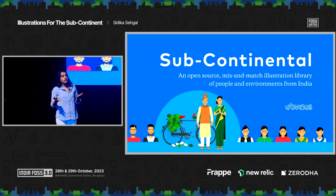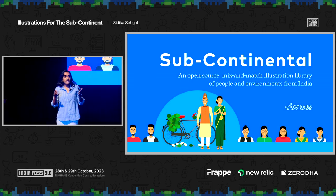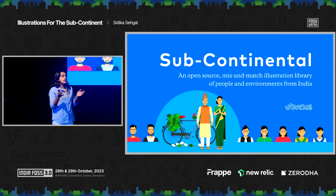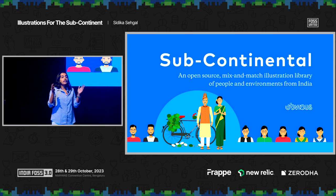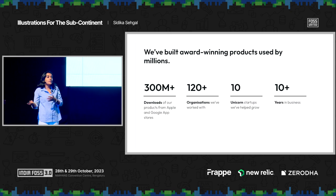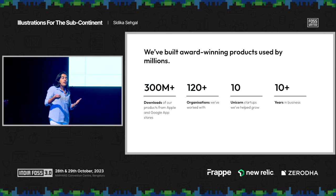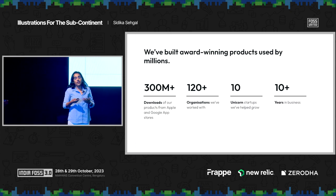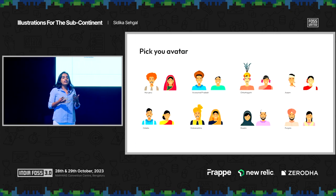That's why we created Subcontinental. Illustrations are really powerful. The right illustration tells you that this app is for you, tells you what to do, and makes your landing page, your social media creative, your mobile app ten times more relevant. We are a product design agency, working for the last ten years, building about 120 mobile or web apps. And we faced this in our work — when we tried to find illustrations for our projects, we didn't find any. That's where Subcontinental started.